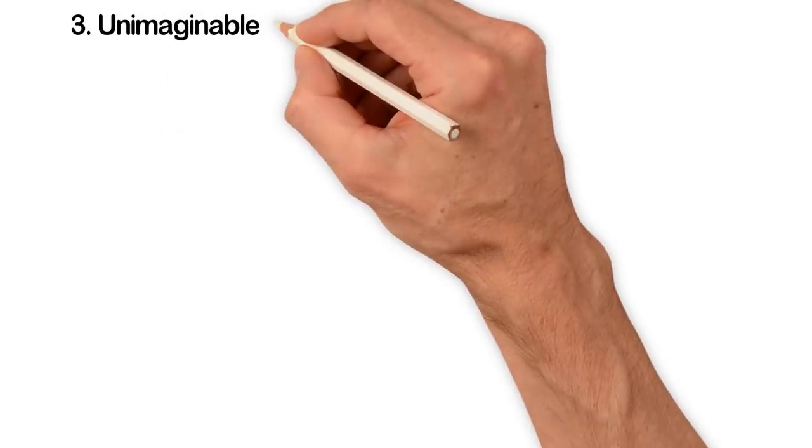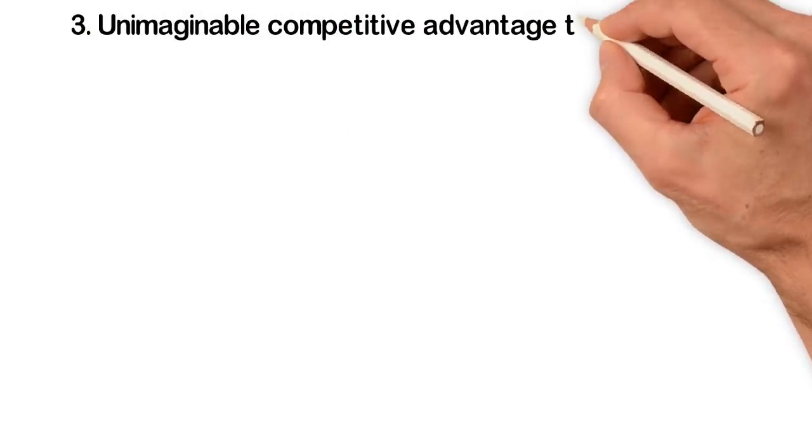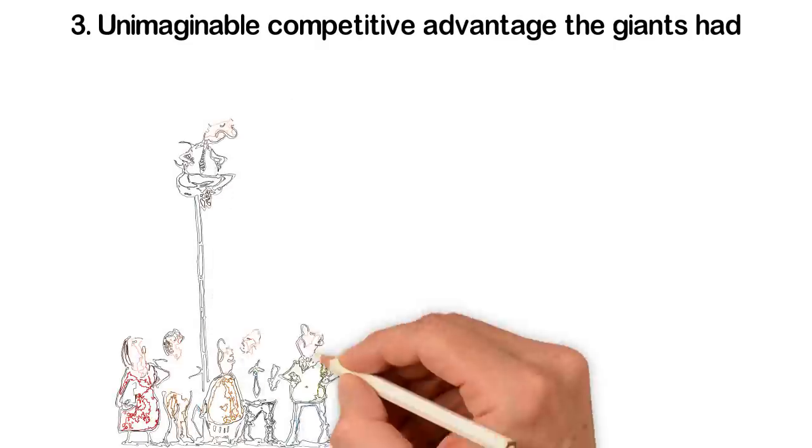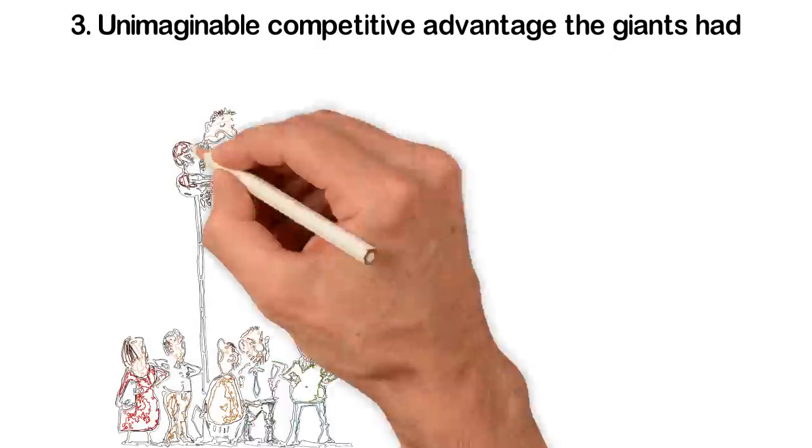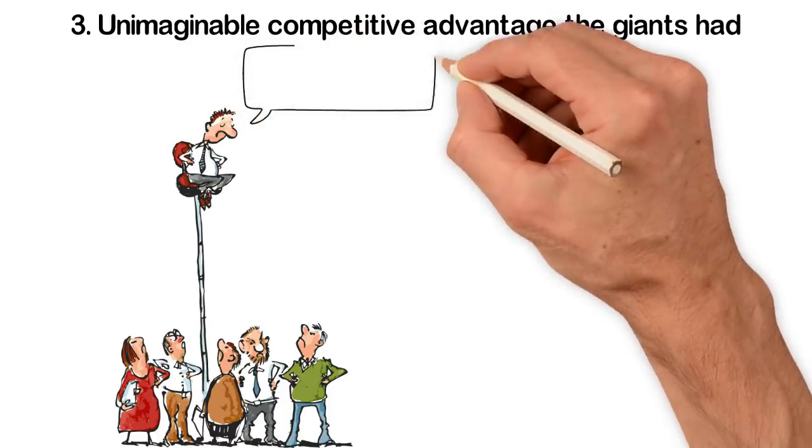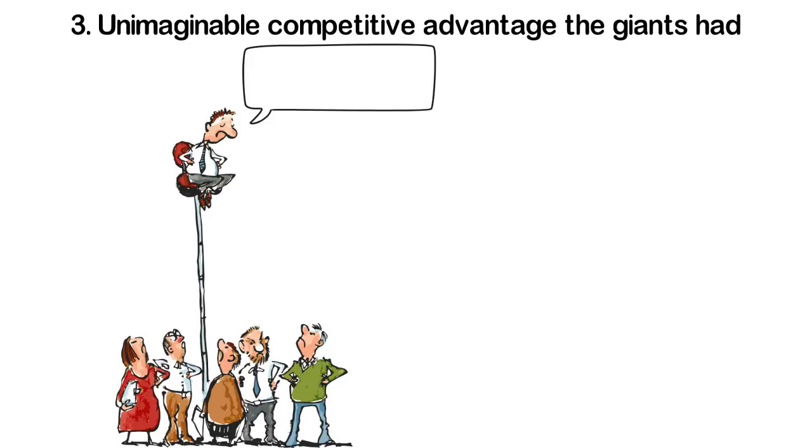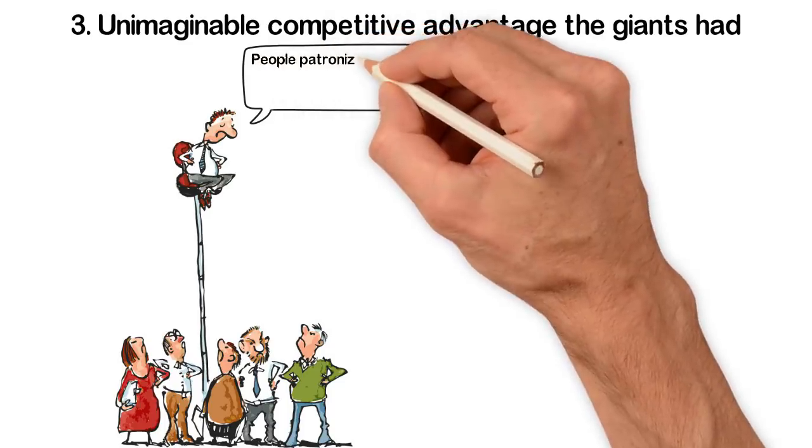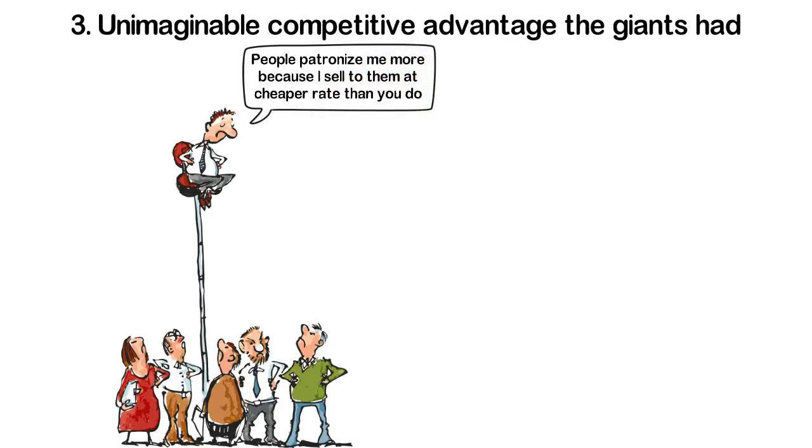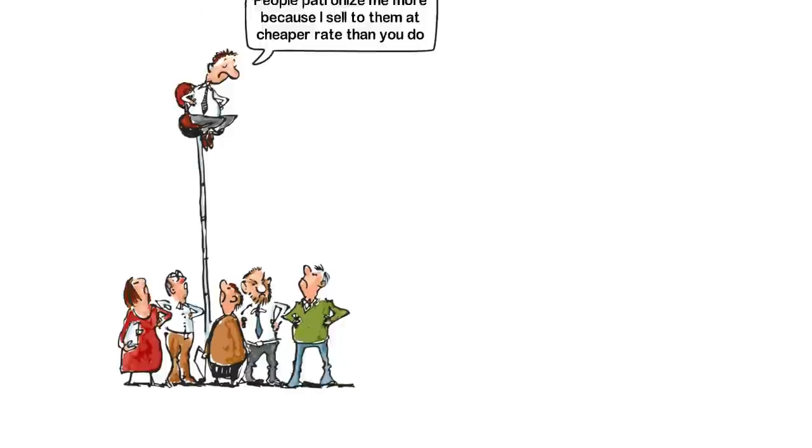Three: unimaginable competitive advantage the giants had. If you are the Rockefeller in the 20th century, you didn't only have money, you had political influence. Rockefeller will go after his stubborn competitors, sell his products at half the price, force the competitors to sell at loss and get out of the market. Today, only a few companies can do that.